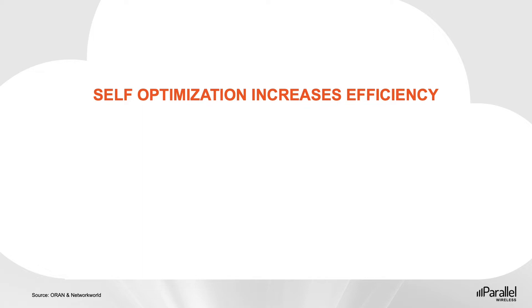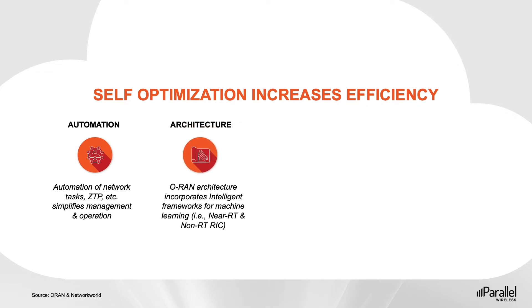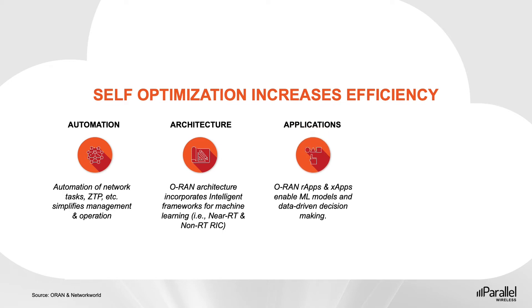This self-optimization capability comes from a number of areas. Automation of network tasks can simplify management and operation while helping operators execute at scale without dramatically increasing support staff. Secondly, the O-RAN compliant architecture inherently incorporates intelligent frameworks for machine learning — specifically the RAN Intelligent Controller, also known as the RIC. The RIC enables programmable control of the RAN at both a near real-time and non-real-time level. The next area of self-optimization comes from RIC applications such as R-Apps and X-Apps, which enable automatic execution of data-driven decision-making and machine learning models.